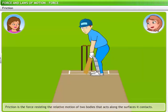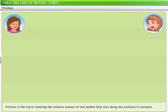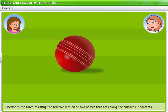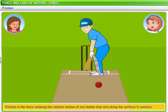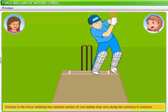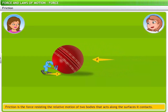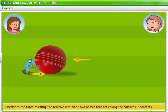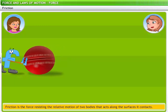Let's observe a game of cricket — the ball, when hit by the batsman, slows down and stops after rolling a certain distance. No one applied any visible force to stop it. The ball stopped due to a force called friction. Friction is the force resisting the relative motion of two bodies, acting along the surfaces it contacts. The bat hits the ball with a certain force that makes the ball move ahead. When the ball rolls down the field, friction acts opposite to the direction of motion, gradually slowing down and eventually stopping the ball.